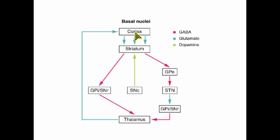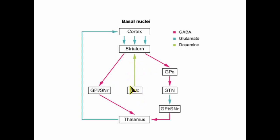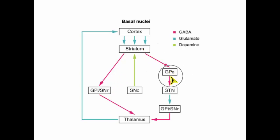That stimulation makes it more likely that you'll have physical movement — that you'll raise your hand, move your arms around, or walk around the room. That's what this is all related to: how these basal nuclei influence movement of your body. There are two different pathways represented here. The one on the left is the direct pathway, and the one on the right is the indirect pathway for motor movement.